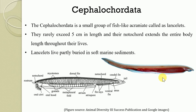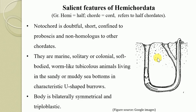Today we are going to discuss in detail the salient features of the first subphylum, that is Hemichordata. The word hemichordata comes from Greek origin: hemi means half and chordae means chord, referring to half-chordate. The notochord in hemichordates is doubtful — it is short and confined to the proboscis, and is non-homologous to the notochord of other chordates.